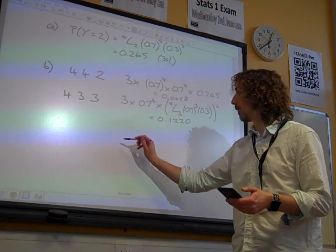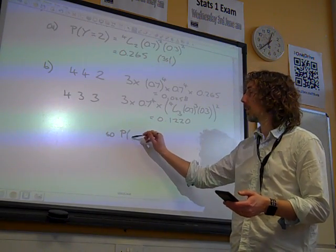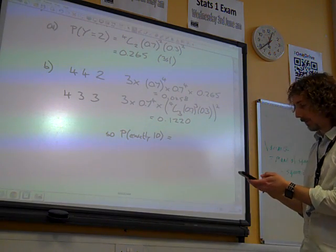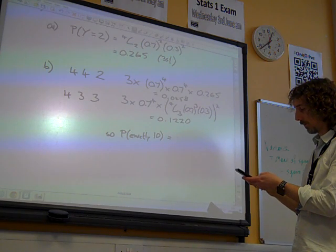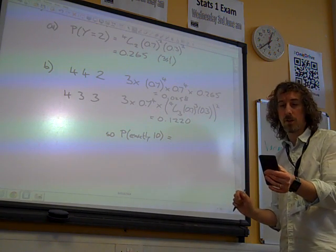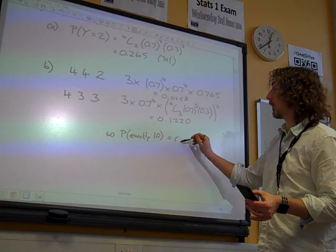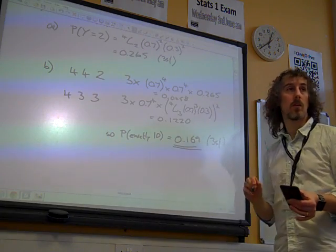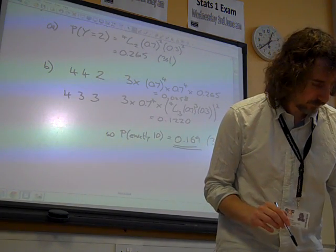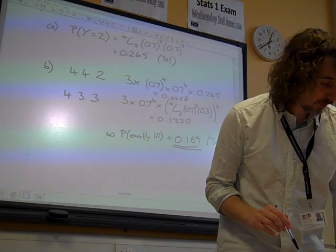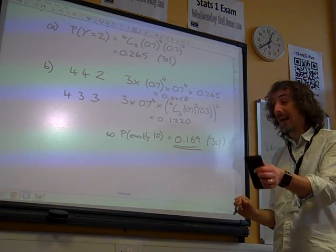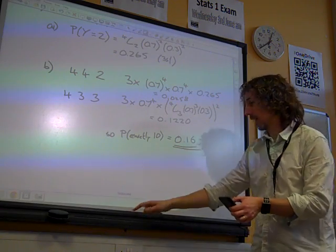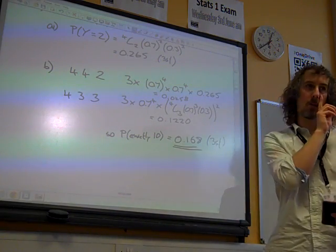And if I add these two together, it is 0.169 to 3 significant figures. There we go. No, it's not. It's 0.168. Sorry, not 0.1678. So I rounded it incorrectly. Oh, don't round it incorrectly. There we are. 0.168.